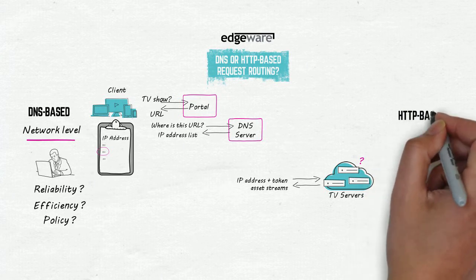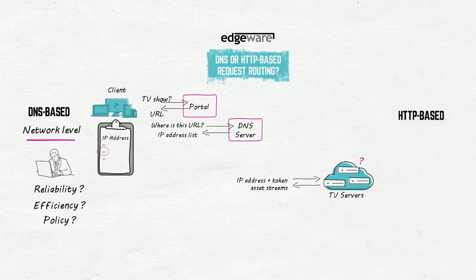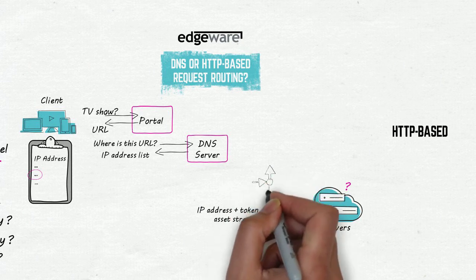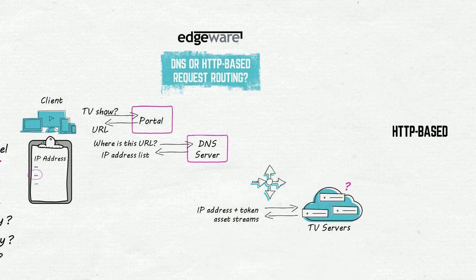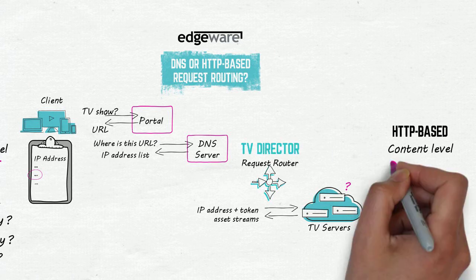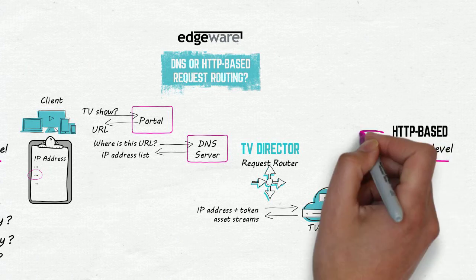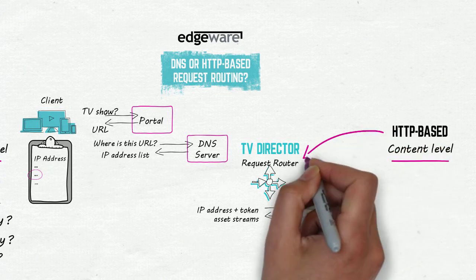HTTP-based request routing works a little differently. HTTP-based decisions are made using a request router. A request router, like Edgeware's TV Director, works on content-level information, so it can use a wider set of routing criteria.